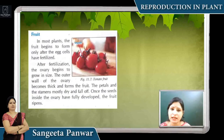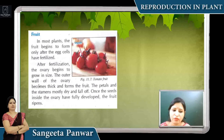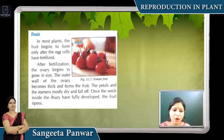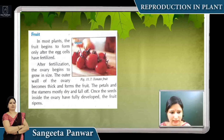Most plants' fruits begin to form only after the egg cell is fertilized. After fertilization, the ovary swells up, and the ovary wall forms the outer wall of the fruit. The sepals and petals dry up and fall off. A new fruit is formed from the ovary, and from inside the egg, a seed is formed.